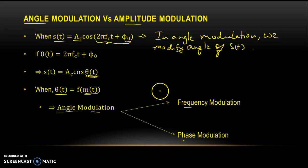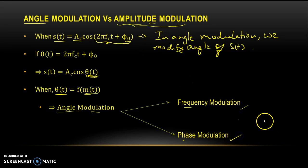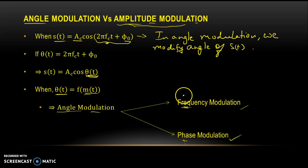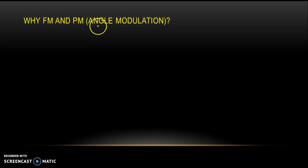A question comes to mind: if amplitude modulation is so successfully and practically used, then why are we going for frequency modulation or phase modulation? Mathematically it's very difficult, and even practically it is very difficult to produce a frequency modulated wave — the circuits involved are not easy, same with phase modulation. But amplitude modulation would be an easy task. Still we are diverting towards frequency and phase modulation, so let's see why.